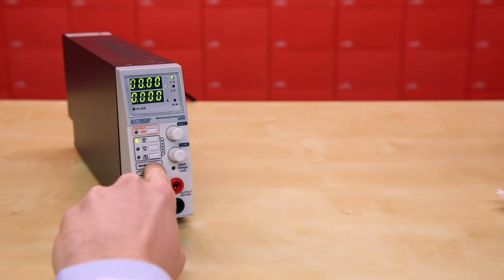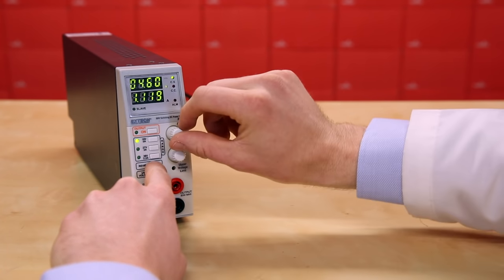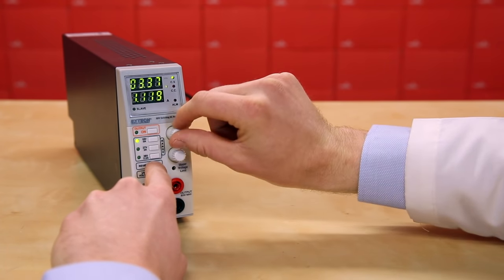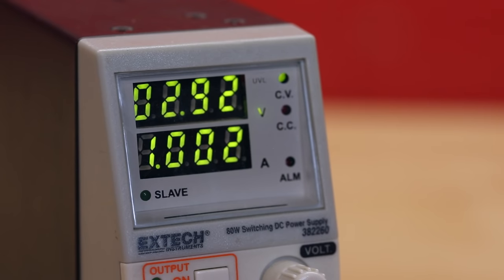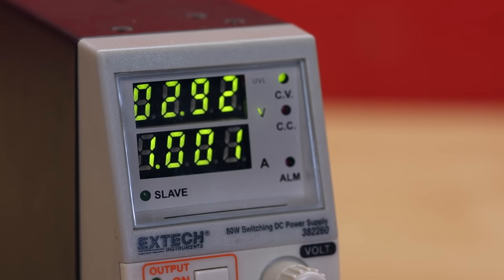Next, hold down the review button and turn the knobs to set the desired voltage and current limit. We'll set the voltage to about 3 volts and the current limit to about 1 amp, which we shouldn't really hit in this demo.